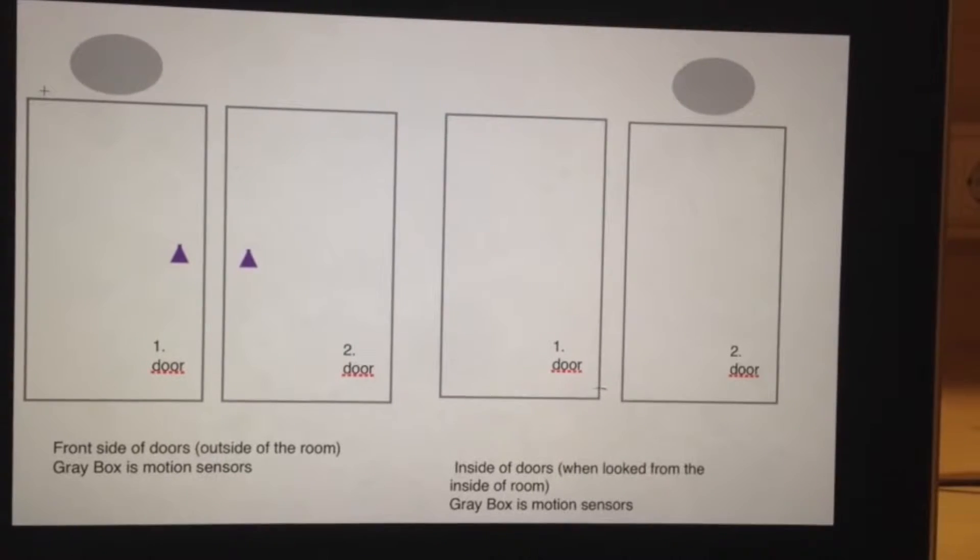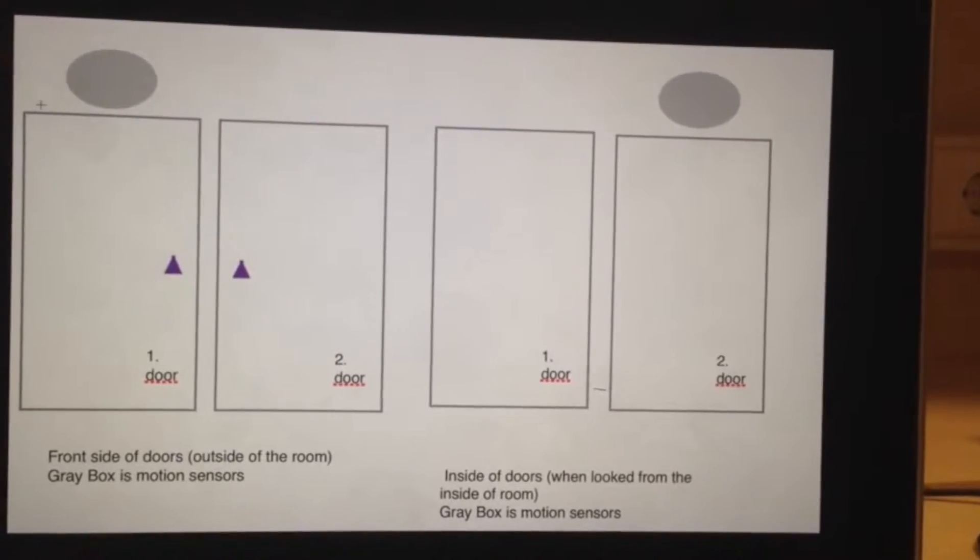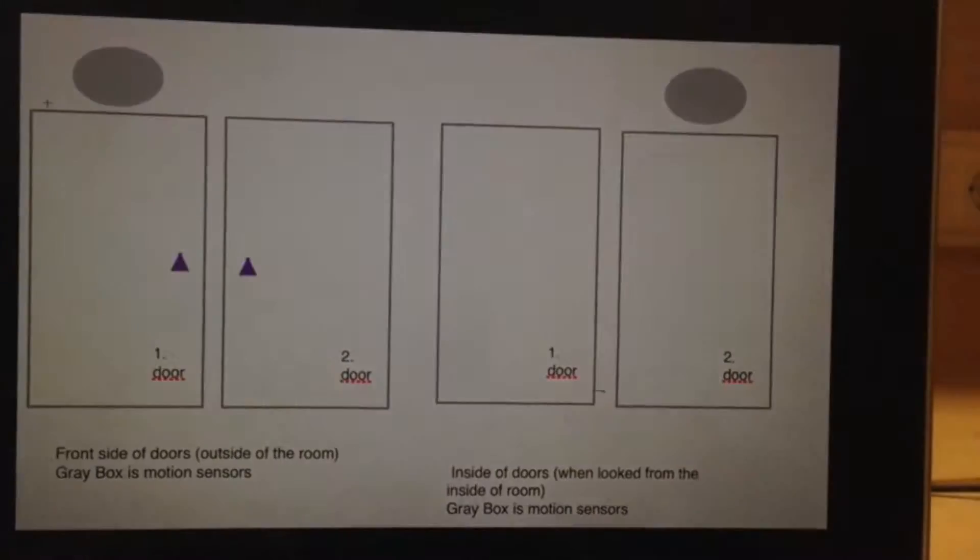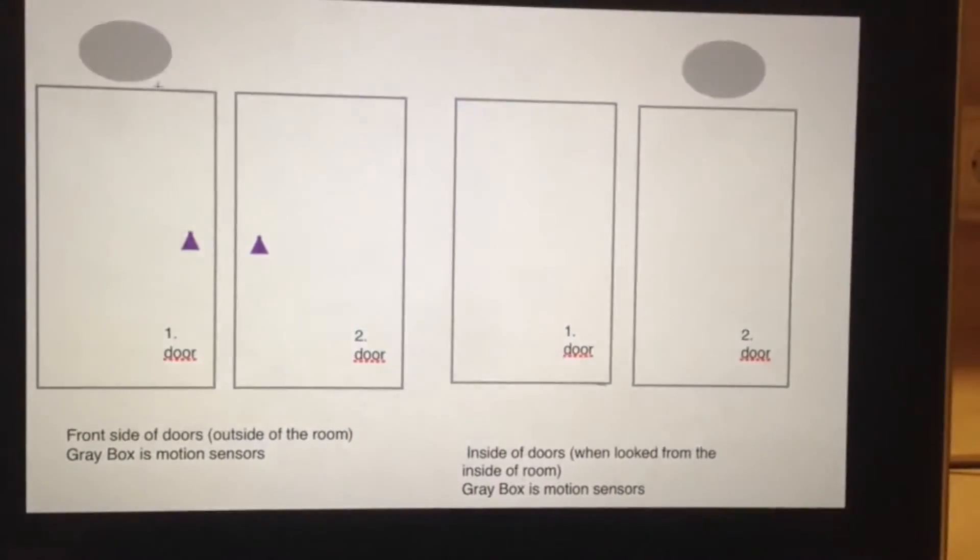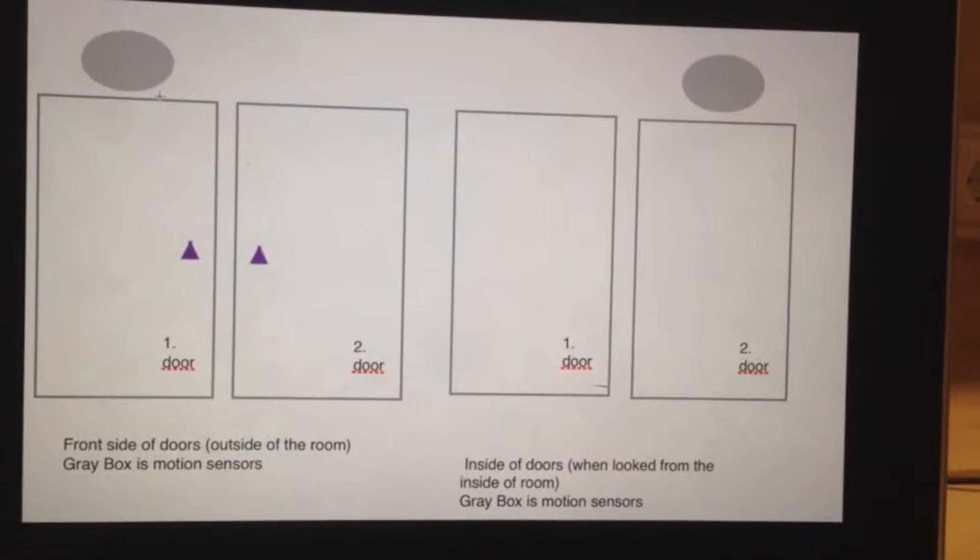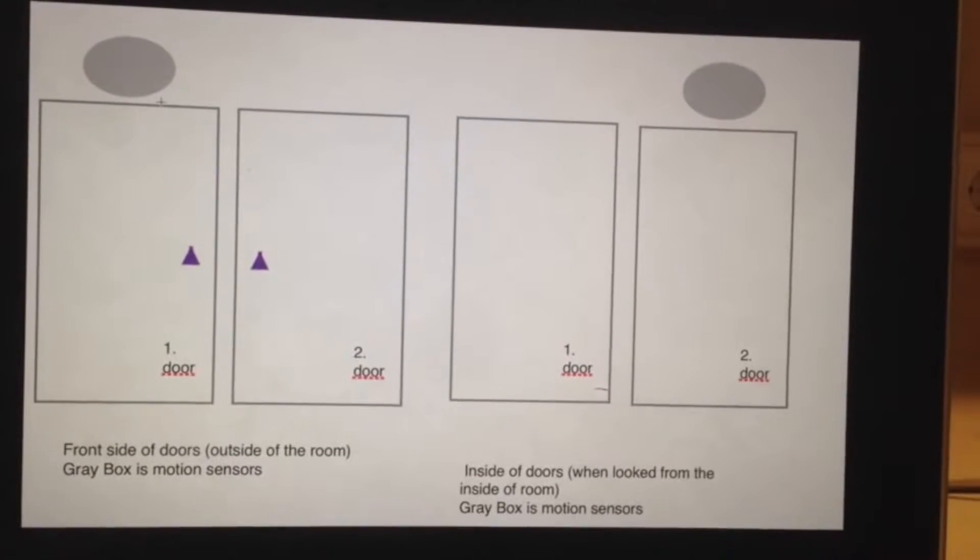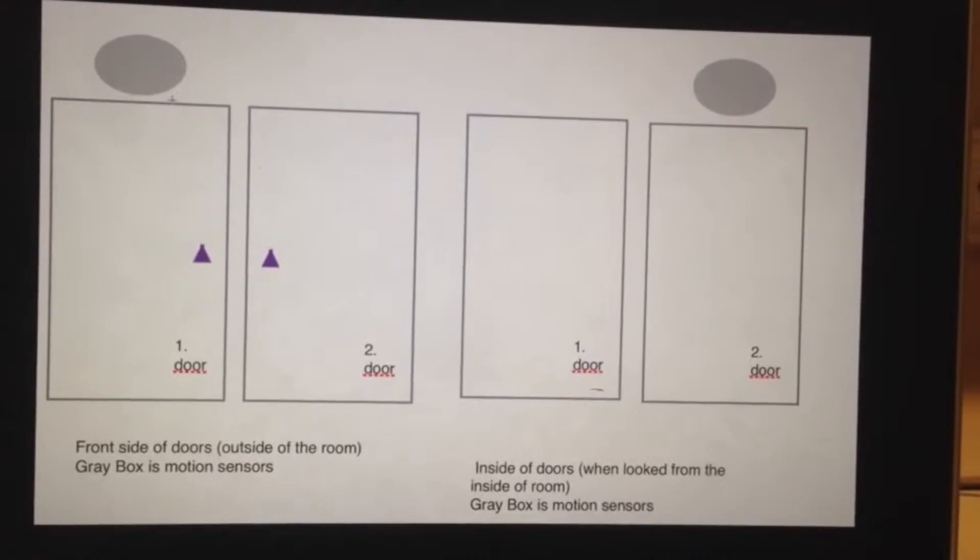I used four motion sensors and two servo motors for my project and I count the number of people in the room as binary. Two servos are at the lateral side of the door and one motion sensor is at the front side of the door and the other is at the back side of the door.